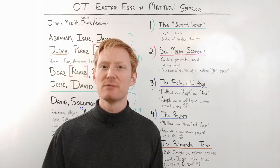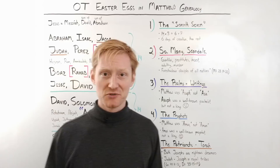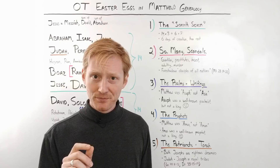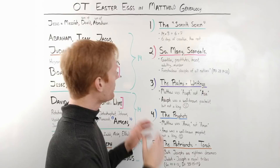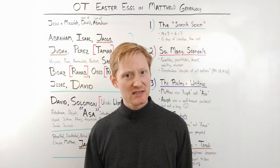Another really fun tidbit: Joseph in the Old Testament was known as a dreamer — he had dreams and could interpret them. The person with the most recorded dreams in the Bible is Joseph, the father of Jesus. So right at the beginning of the New Testament, we have the Psalms, the Prophets, and the Torah — all three elements of the Old Testament combining to point to Jesus as the Messiah, a promise that came not only for Israel but for all nations.